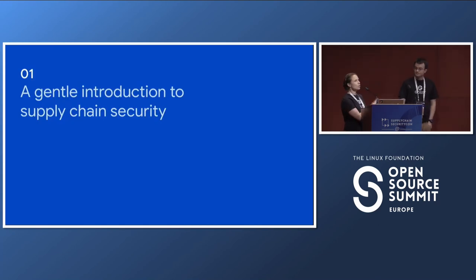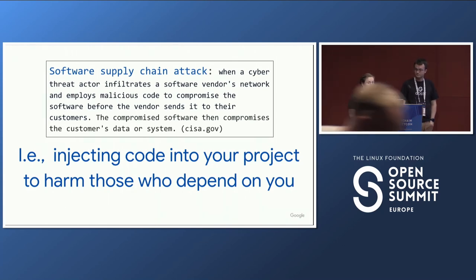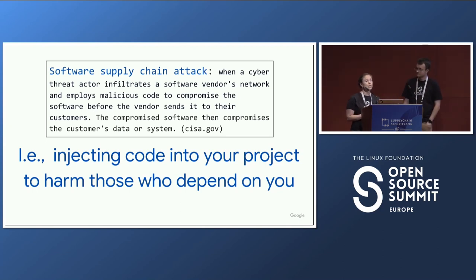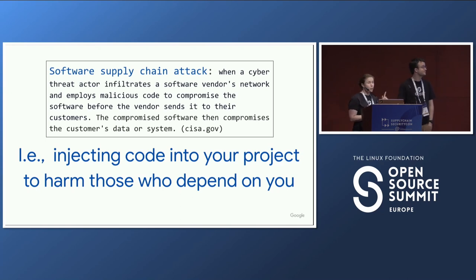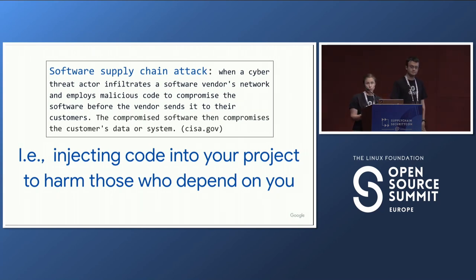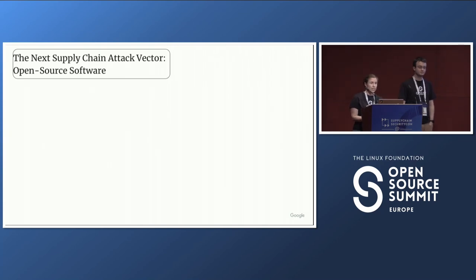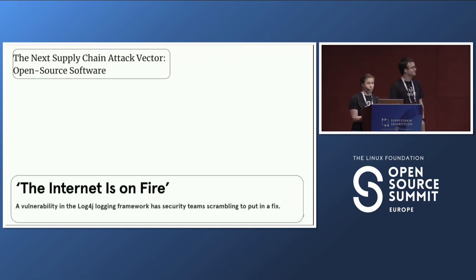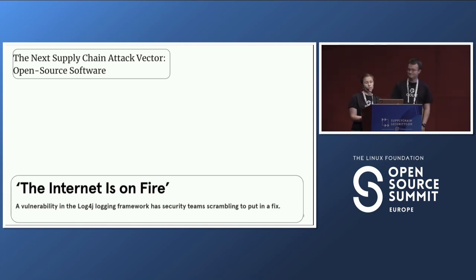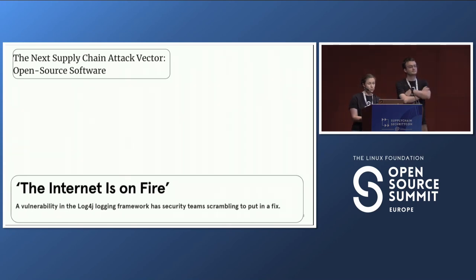What is supply chain security? What are supply chain attacks? For maintainers, we can say that a supply chain attack involves injecting code into your project to harm those who depend on you. Not everything starts from a malicious mindset — some things start as innocent bugs that nobody noticed. For example, one of the big-name supply chain emergencies in recent years started as an innocent bug that had been overlooked, but when it was discovered it set the internet on fire. That was a vulnerability in Log4j, an open-source project relied upon by a huge portion of the Java ecosystem, and it sent developers around the world scrambling to patch this accidental bug that opened a major security risk.